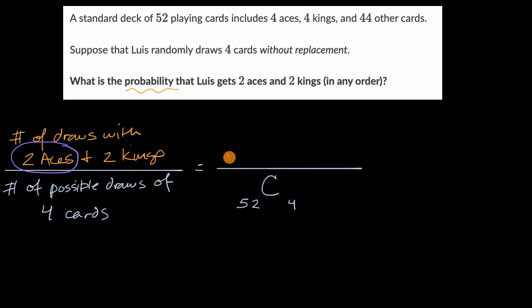So if we say 4 choose 2, this is the total number of ways, when you don't care about order, that you can have two out of your four aces picked.